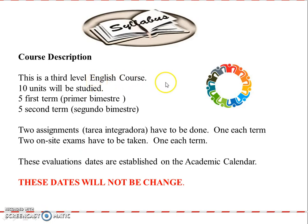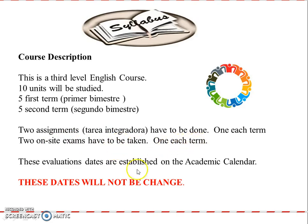This is a third-level English course. Ten units will be covered altogether — five in the first bimester and five in the second bimester. Two assignments, or tarea integradora, have to be done, one each time, and two on-site exams have to be taken. These evaluation dates are established on the academic calendar and cannot be changed.